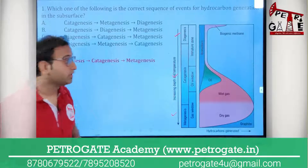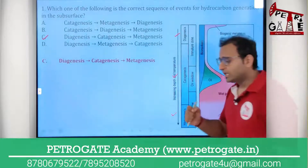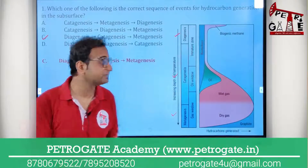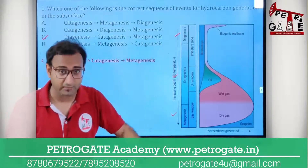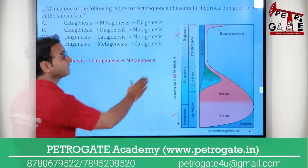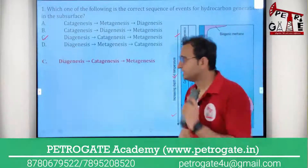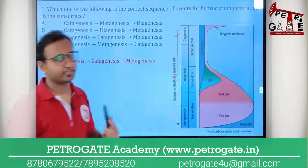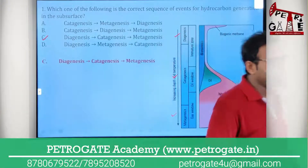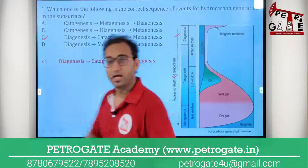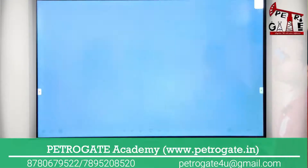You have to remember all the properties — all the temperature and pressure ranges. What is the vitrinite reflectance in the diagenesis zone, in the catagenesis zone, and in the metagenesis zone? You must remember this data related to diagenesis, catagenesis, and metagenesis. This is very important — that's why it's repeating again and again.